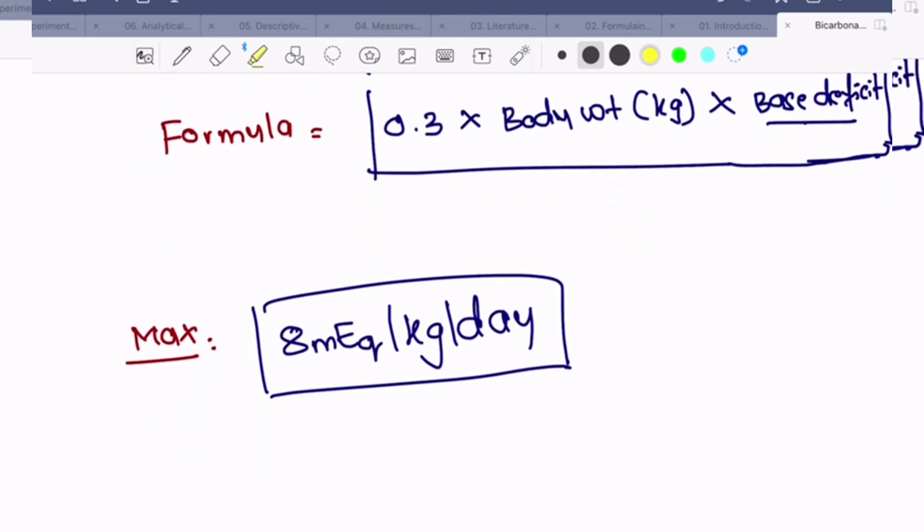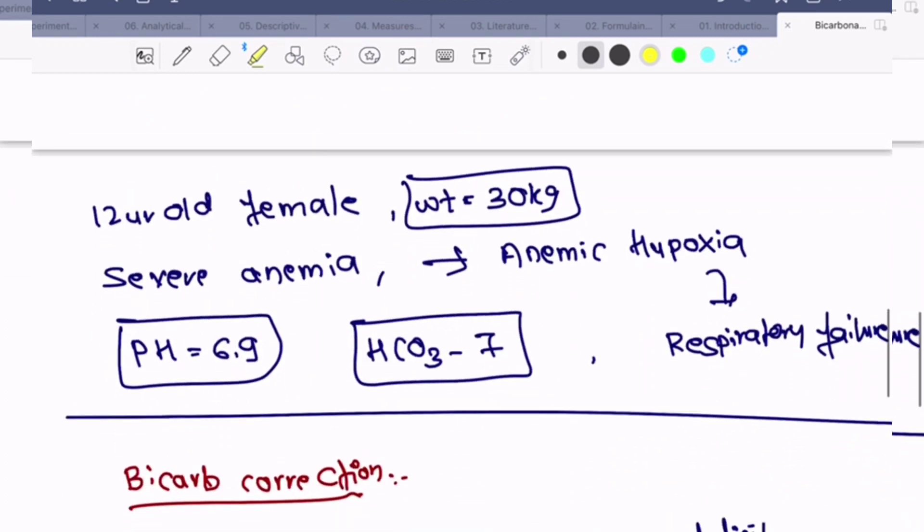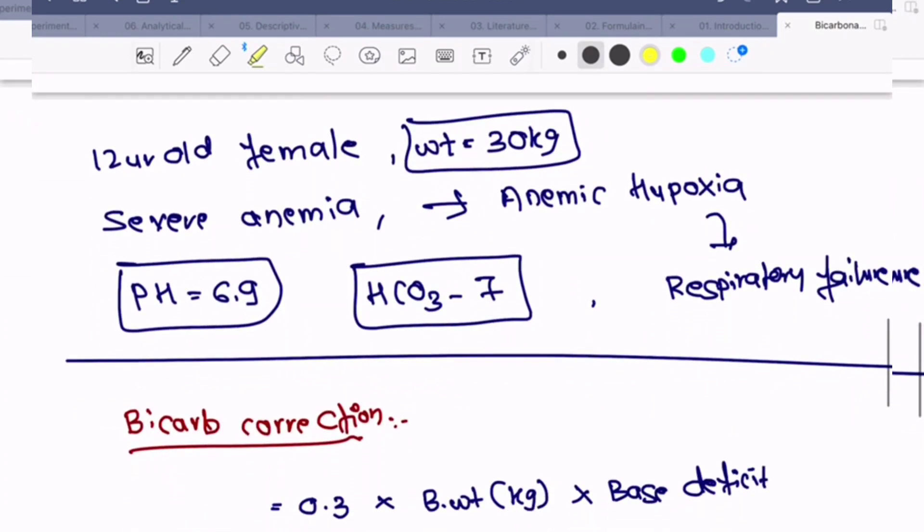Now we have one case: a 4-year-old female child, 30 kg, presented with respiratory failure. She had severe anemia with Hb of 3.5 and presented to the ER with anemic hypoxia and progressed to respiratory failure.